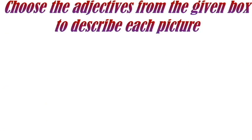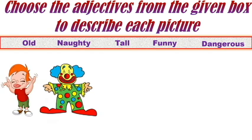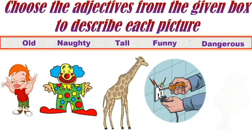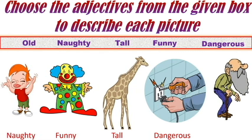Now let's move on to the fourth and the last activity: choose the adjective from the given box to describe each picture. The words are old, naughty, tall, funny, dangerous. Looking at that kid, we feel he is naughty. Second picture — it's a clown and you feel funny. Third one — you can see a giraffe, and the giraffe is tall. Fourth one — you can see a person playing with electricity — it is very dangerous. Fifth one — you see a grandpa and he is very old. You got the right adjectives.